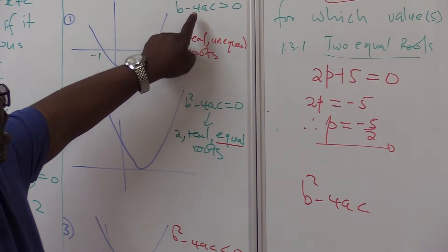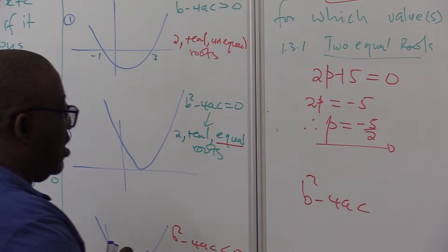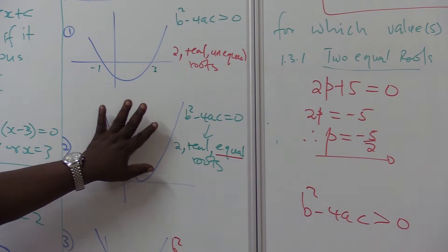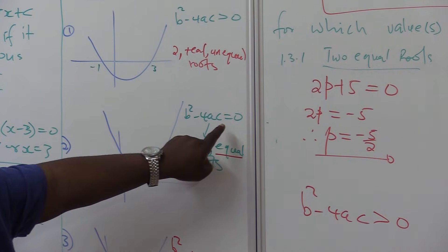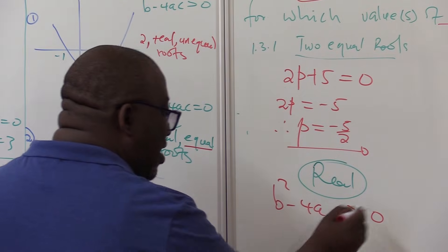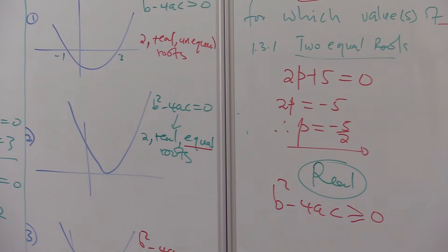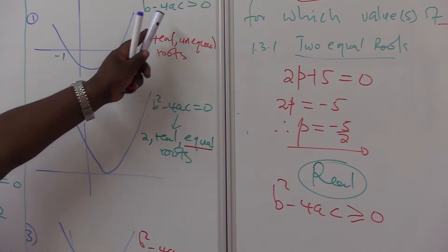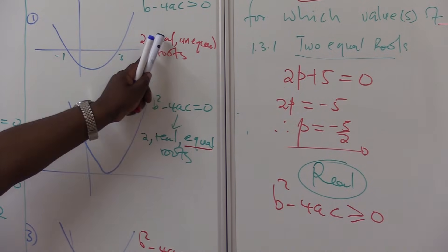Yes, we do have real. And how is its discriminant? It is greater than zero. Do we have real here? Yes. And how is its discriminant? It is equal to zero. So the sign that you will be using when it is only real, it will be greater or equal to. Because it can be there or here when it is only real.